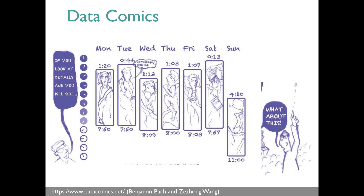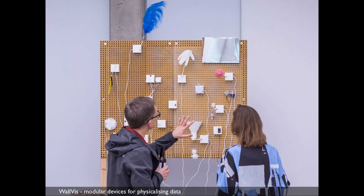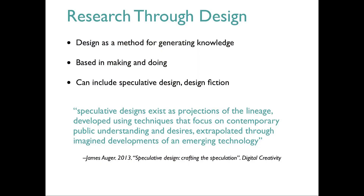Some of the work is quite low tech — data comics, using graphic novel elements to communicate complex data to the public. This is very necessary: how do we get tricky scientific concepts into a form people can understand? Sometimes this ends up as physicalization, like the Wolves project where each white box is connected to a data source — a blue feather wiggles every time a Just Eat bike is returned to its docking station — making abstract data streams tangible and present in a fun, playful way.